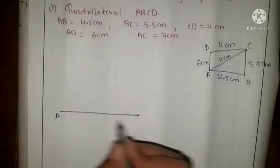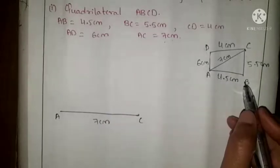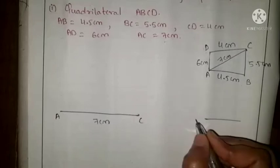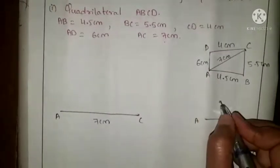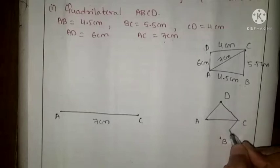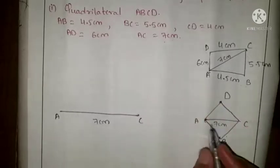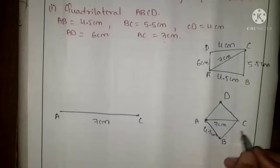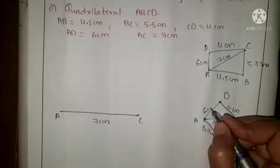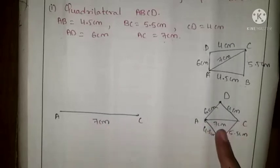Label this line segment. If you take AC as a base side, the quadrilateral figure will have AC as the base, point D on one side and point B on the other. AC = 7 cm, AB = 4.5 cm, BC = 5.5 cm, CD = 4 cm, and AD = 6 cm. According to this figure we have to start the construction. We have already drawn AC = 7 cm; next we have to construct points D and B.